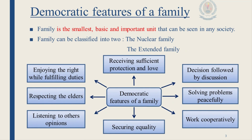First, we will look at the democratic features of a family. The family is the smallest, basic, and important unit that can be seen in any society. A family can be classified into two types: the nuclear family and the extended family. A nuclear family has a mother, father, and children, but in the extended family, father, mother, children, grandparents, uncles, and aunts are all living together.